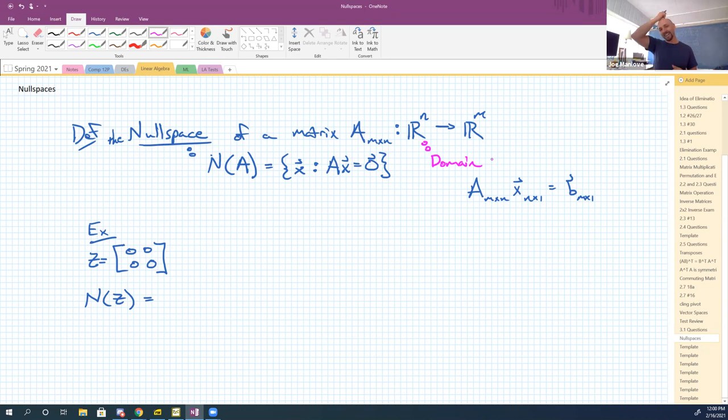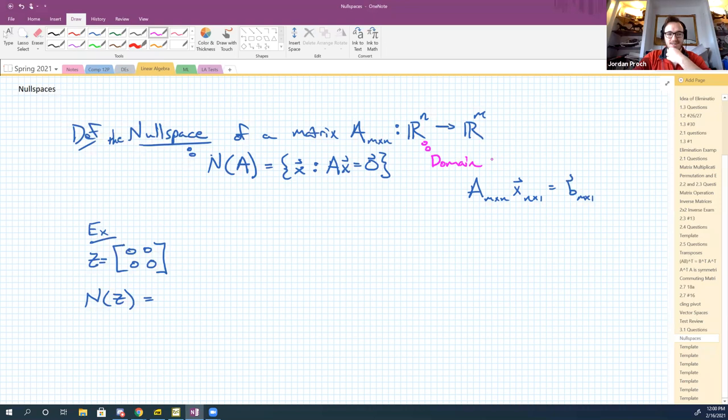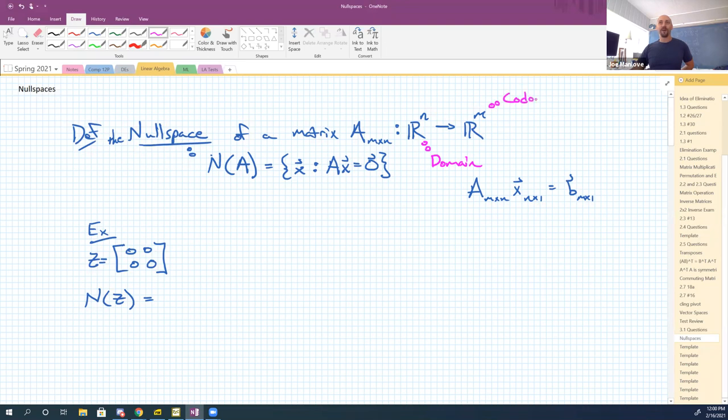Alright, so everybody's with me that the space of vectors that a function takes is called the domain, right? Now, what's the other side of this called? And this is where you're allowed to be wrong because we lied to you before. What's the other side of this usually called? Range. Yeah, we oftentimes call it the range. It is in fact the codomain. Because the range is the set of things that actually get mapped to. Right? Not the space into which you're throwing darts.